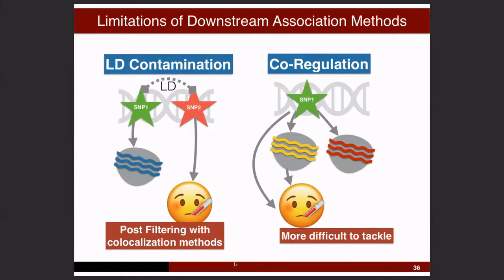Association methods have two key problems. First is LD contamination: if one SNP co-localizes with a gene's expression and a different SNP co-localizes with disease risk, but those SNPs are in high LD, running an association method will give confounded results. This is a known limitation. Using BSLMM — which has both a sparse and polygenic background component — actually gives more opportunities for contamination, so we recommend using ElasticNet or sparser models instead. But even then, you may still be subject to contamination.